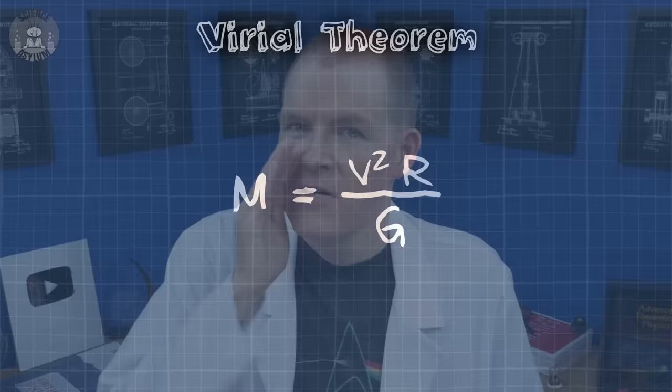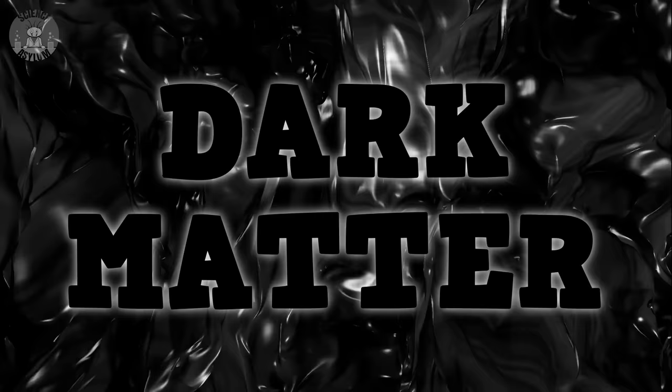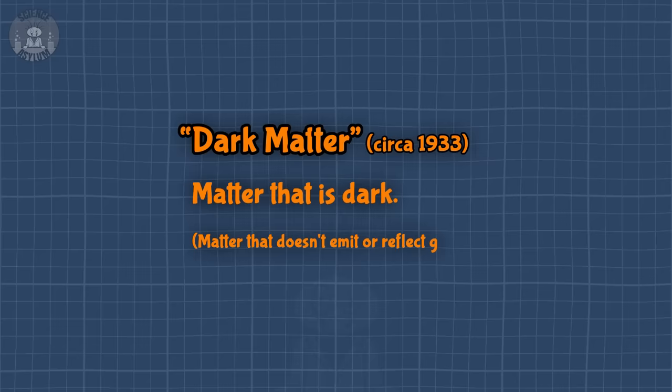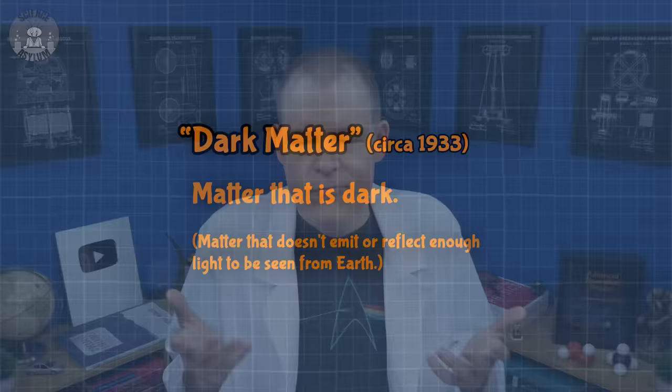Spoiler alert! The measured mass wasn't enough. Tricky Zwicky inferred there must be matter there that couldn't be seen. There must be some kind of DARK MATTER! Now, I say inferred rather than discovered because he had entirely the wrong impression and his estimates were way off. By dark matter, Zwicky meant matter that is dark. Essentially, stuff that doesn't emit or reflect enough light to be seen from Earth. Sure, that could be weird stuff, but a lot of ordinary things meet that definition too.